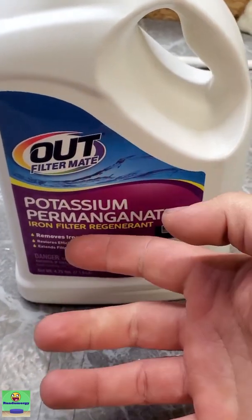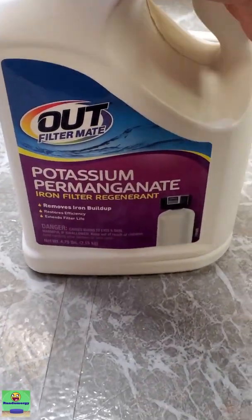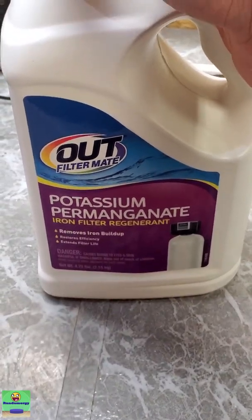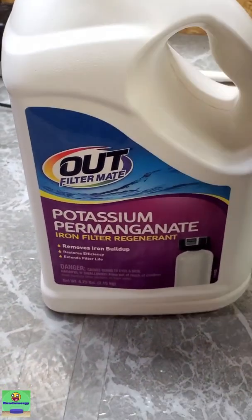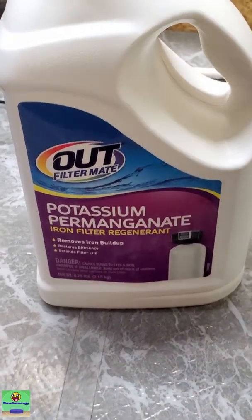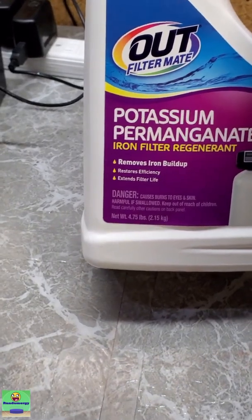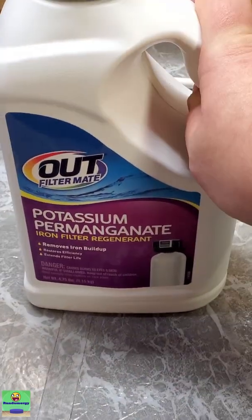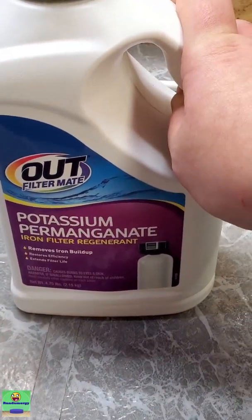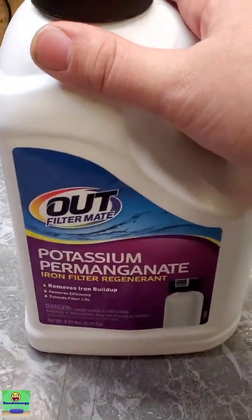Apparently this is a potassium permanganate iron filter regenerate. I've heard of people talking about this, but I've always been kind of jealous because I've never actually seen one at my local hardware stores. So whenever I saw this, I was like, oh yeah, I'm buying that. It's like 4.75 pounds. I think this was, it wasn't super cheap. It was like 30 bucks, but it's for almost five pounds of potassium permanganate. That's pretty cheap.